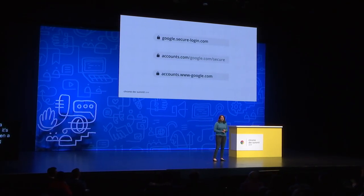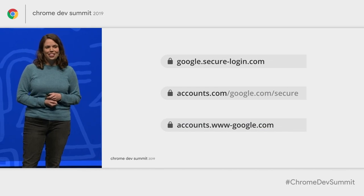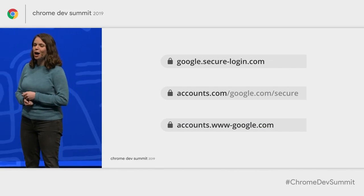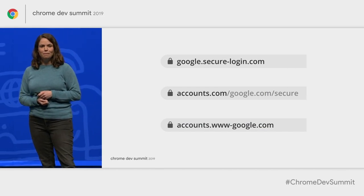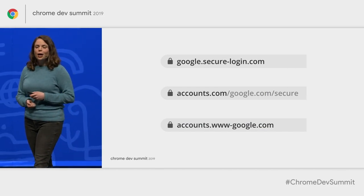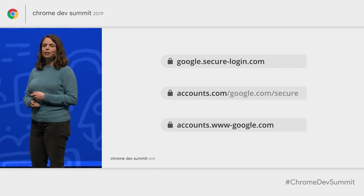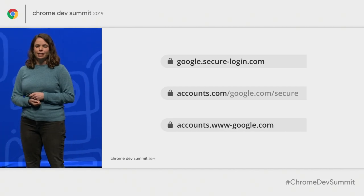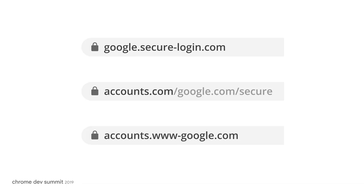In theory, the URL bar shown at the top of a web browser is your unambiguous clue to website identity. If the URL bar says google.com, you're at the real Google. But in practice, it's not always so easy to tell site identity from a domain.